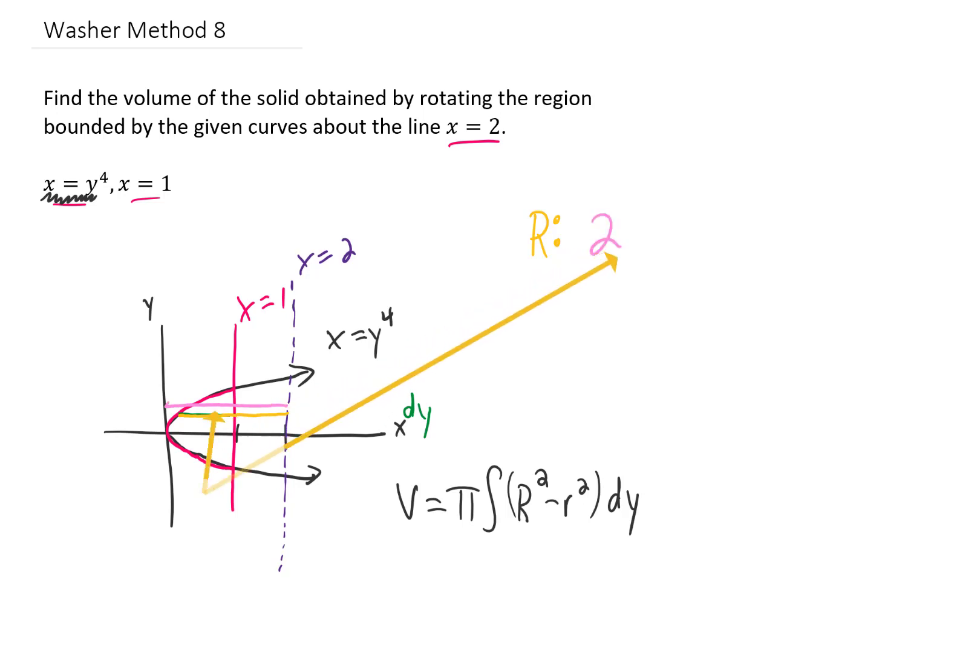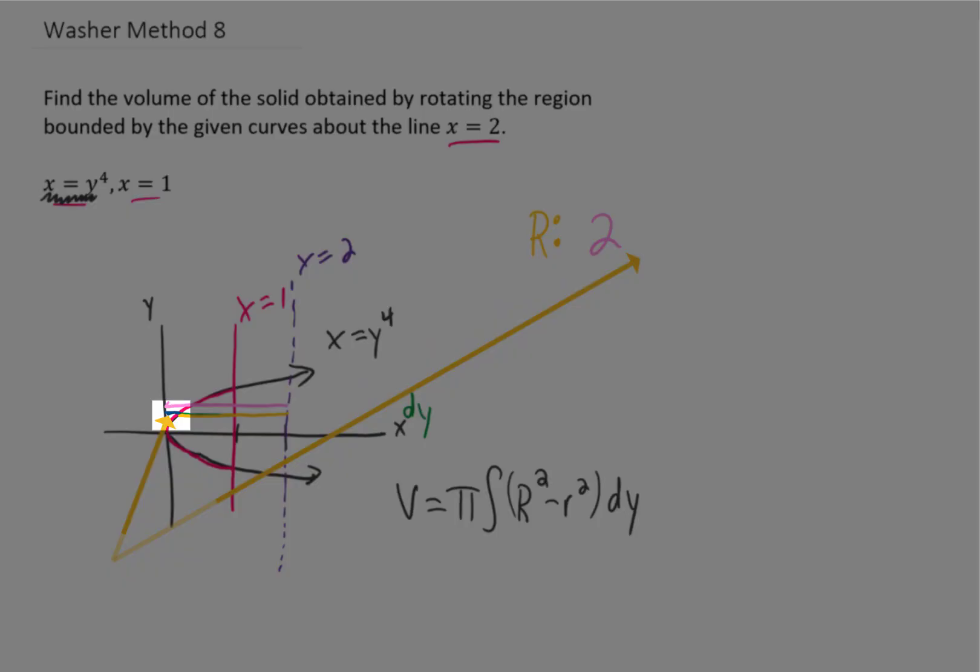The outer radius of this washer looks to me like we can calculate by taking this length here, which is 2, and subtracting this little length right here, which is given by the function x equals y to the fourth.